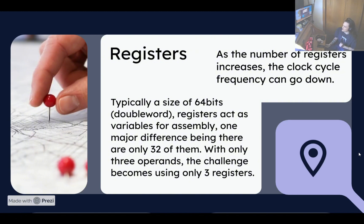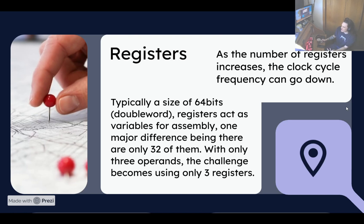With only three operands, the challenge becomes using only three registers at a time. As the number of registers increases, the clock cycle frequency can go down. If you have 128 registers and something is stored in the 127th register, searching for it in an operation might take some time. The clock cycle frequency is only as fast as the slowest operation, so waiting on that last register dramatically slows things down. 32 seemed to be the magic number for RISC architecture — balancing complexity and performance.